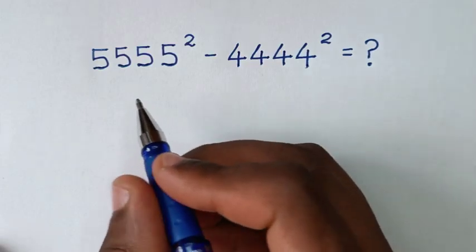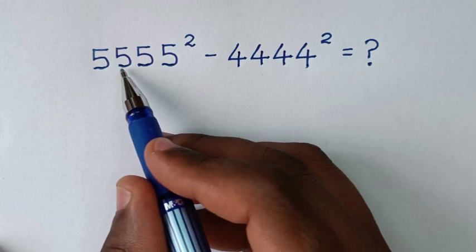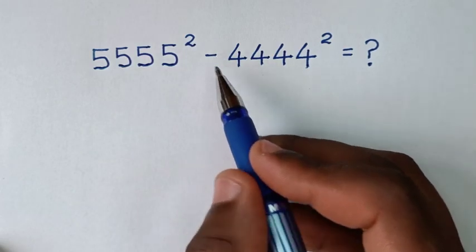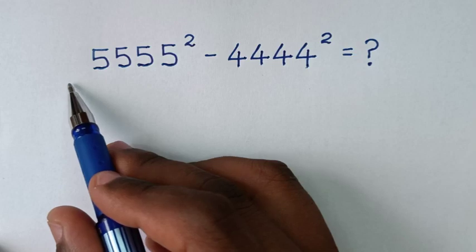Hello, you are welcome to solve this math problem which is 5555 squared minus 4444 squared. Now from this, our problem is in the form of a perfect square, so we'll apply a perfect square rule in this form.